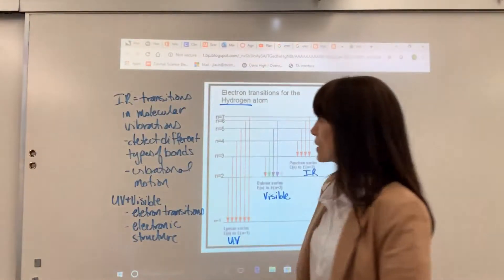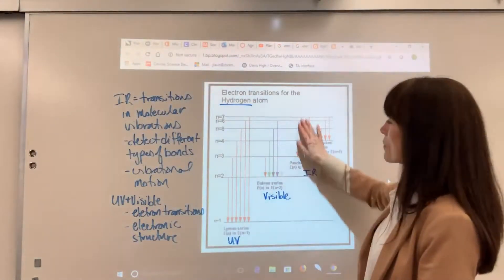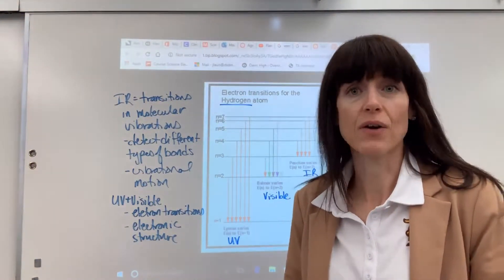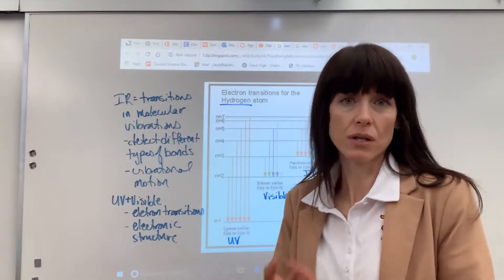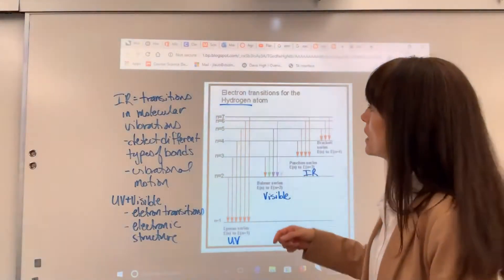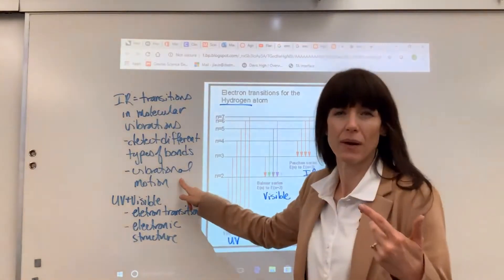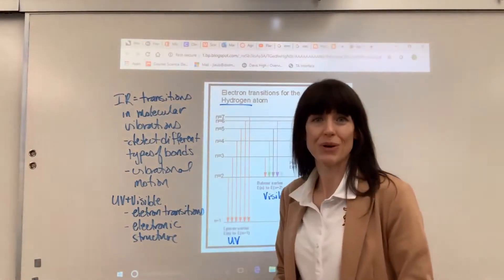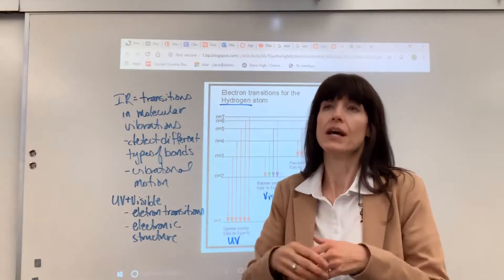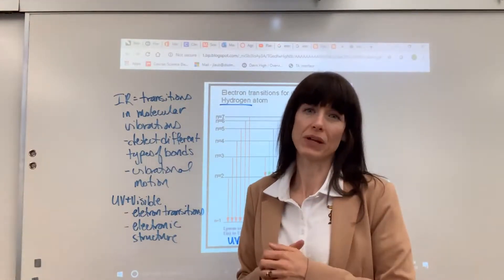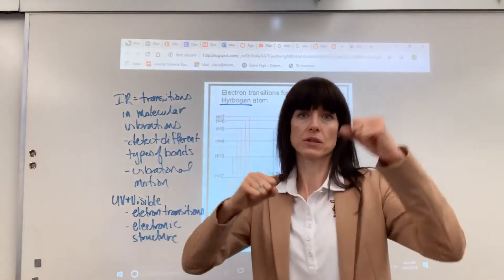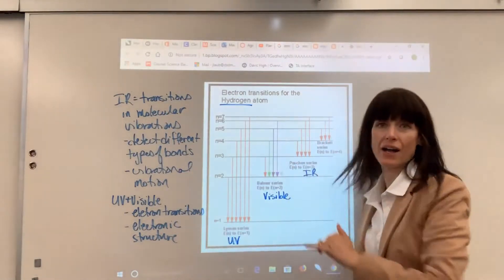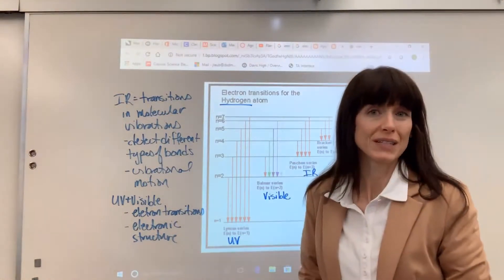A couple of details for you. In the IR region right here, this is where we detect molecular vibrations. And because of that, we can use that data to determine different types of bonds. So we detect different types of bonds. In a different video, you learned about vibrational motion — how the atoms vibrate. There's a linked Wikipedia page showing different vibrations where atoms can move in different ways. That is going to be revealed in the IR region so we can identify types of bonds.